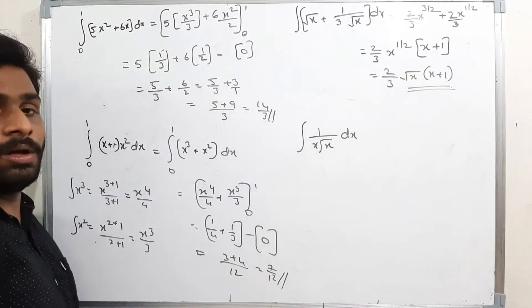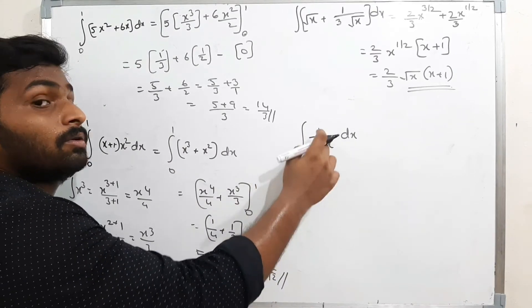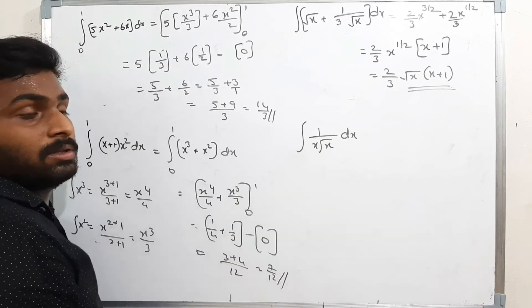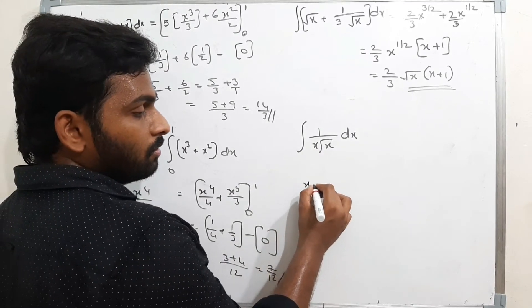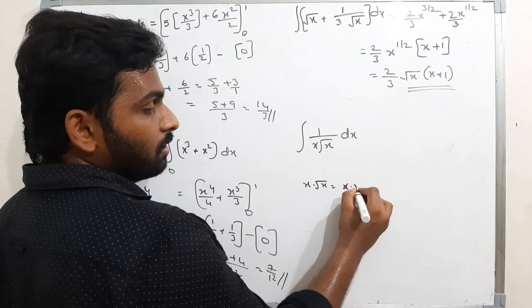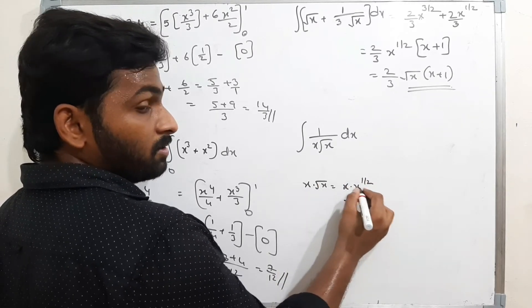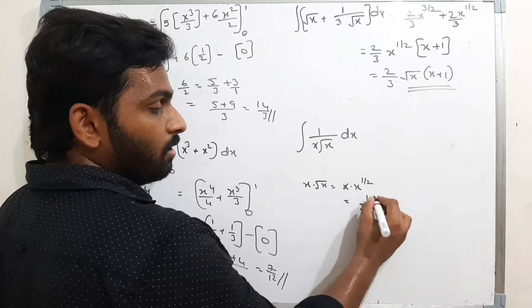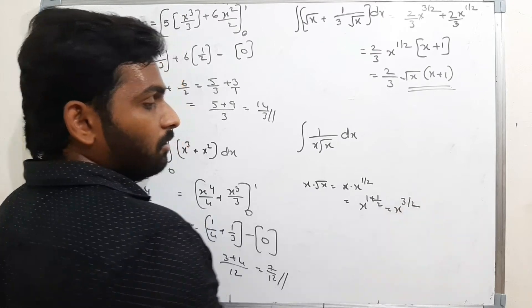Now, the integration of 1/(x·√x). Here x times √x means x times x^(1/2), and adding powers gives x^(1 + 1/2) = x^(3/2). So 1/(x·√x) = 1/x^(3/2).